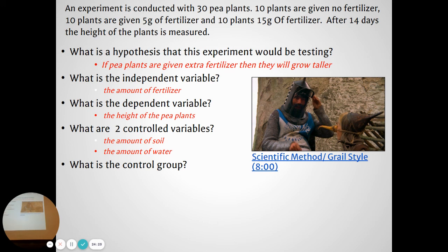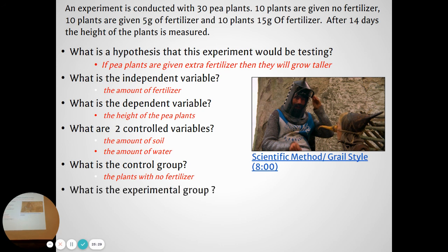Okay, almost there. When we have an experiment we want to have a control group and one or two experimental groups. What's the control group in this experiment? The control group is the one where you're not changing anything — that would be the pea plants that Kai doesn't give any fertilizer to, the ones with zero fertilizer. What about the other groups? Those are called experimental groups — the ones getting five grams of fertilizer and 15 grams are our two experimental groups.